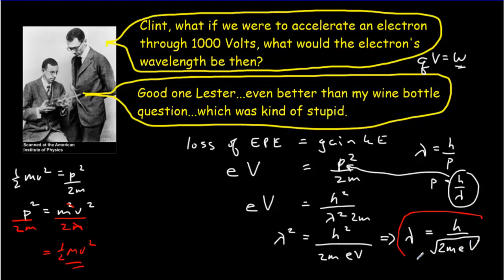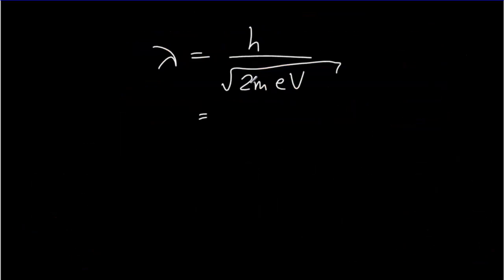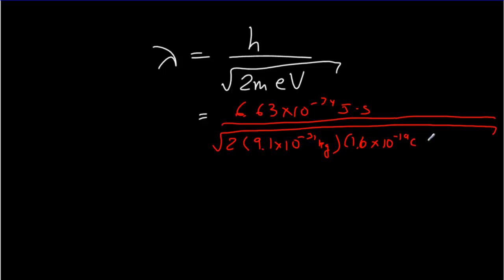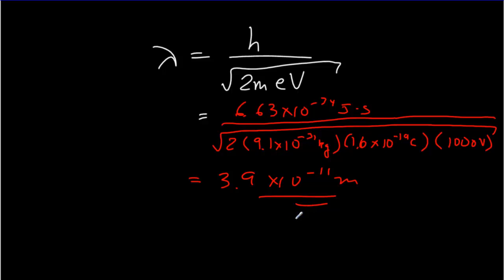Substituting numbers: h is 6.63 times 10 to the minus 34 joule-seconds, mass of the electron is 9.1 times 10 to the minus 31 kilograms, charge of the electron is 1.6 times 10 to the minus 19 coulombs, and the voltage is 1,000 volts. Multiplying that all out gives an answer of 3.9 times 10 to the minus 11 meters — on the order of 10 to the minus 10 meters for electrons accelerated through 1,000 volts.